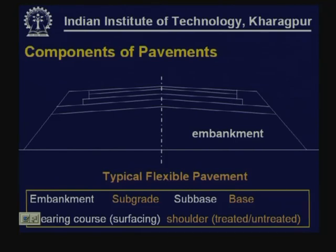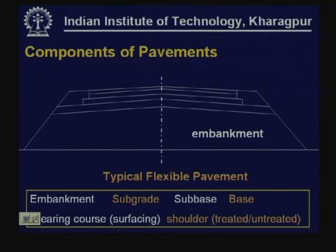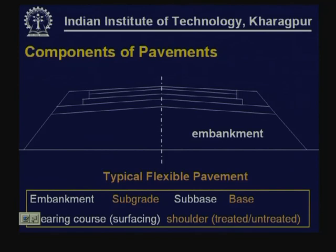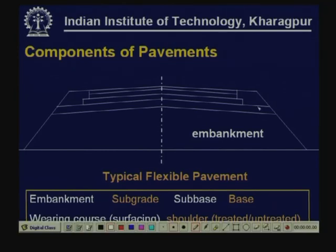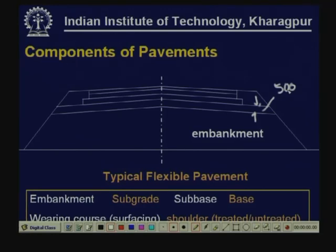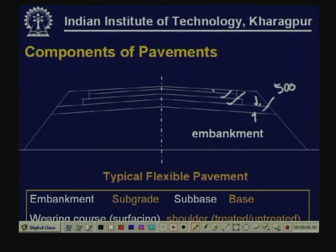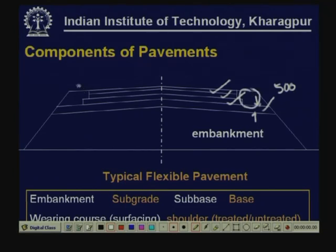A pavement has different components. For example, a flexible pavement may be on embankment or on cutting. You may have an embankment consisting of soils, and also a subgrade — the top either 300 mm or 500 mm which is prepared to standard specifications and to attain specified strength is considered to be subgrade. So we can have embankment, subgrade, different layers of granular materials, bituminous layers, and shoulders that can be either treated or untreated.